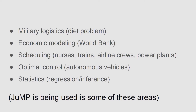I know this is a diverse audience, so I wanted to motivate mathematical optimization and give some very traditional applications of it. Some of the first applications of optimization in the 1940s and 1950s were in military logistics. A very classical problem is the diet problem, where you're trying to come up with a diet for soldiers to consume, minimizing the cost of the ingredients and satisfying nutritional requirements. In economic modeling, the World Bank in the 1970s actually developed one of the first modeling languages that's still in use today.